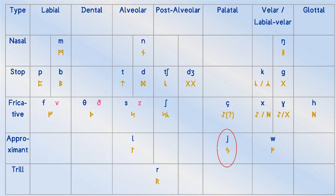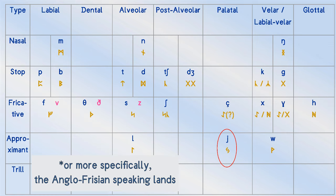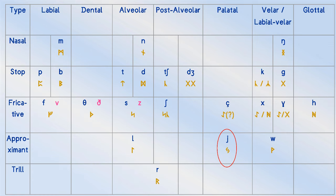That leads us to our final consonant, Y. Again, the runemasters across England were divided on how to handle it, but they all agreed it had to change. Some placed a stave straight down the middle between its two bows. Others put its bows back to back and enlarged them while giving smaller bows to the G rune to distinguish them. Still others appear to have reversed the bows but kept them small while adding a stave.